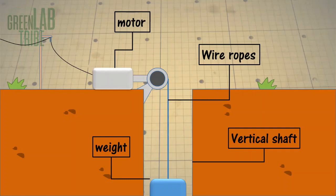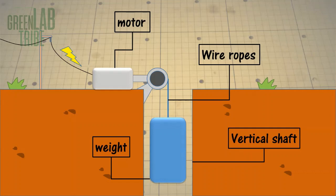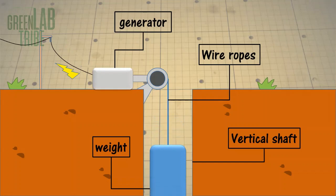You have a weight attached to a wire rope system. The weight is raised with an electric motor powered by any energy source, preferably a renewable one like solar or wind. While the weight is up, you can release the stored energy when needed.